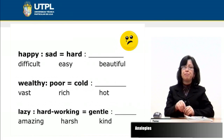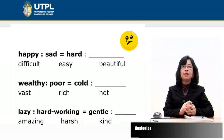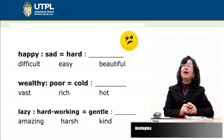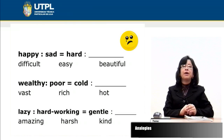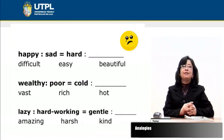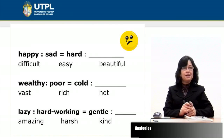Now let's look at a different category. We have 'sad' is for 'happy.' We need to decide among difficult, easy, and beautiful. First, it is necessary to understand that 'sad' is an antonym of 'happy.' So we have to look for the antonym of 'hard.' The antonym of 'hard' is 'easy.' So the analogy is solved: sad is for happy as easy is for hard.